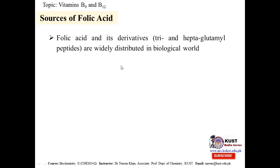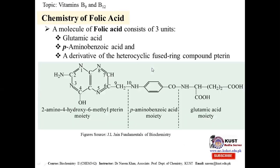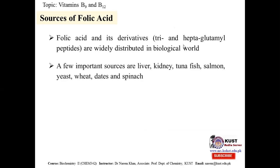Different sources of folic acid: folic acid and its derivatives may be triglutamate or heptaglutamate forms. The common folic acid forms have three, five, or seven glutamic acid units — heptaglutamyl groups — linked to the pterin ring system, and these tri- and heptaglutamate derivatives are distributed throughout the biological world.